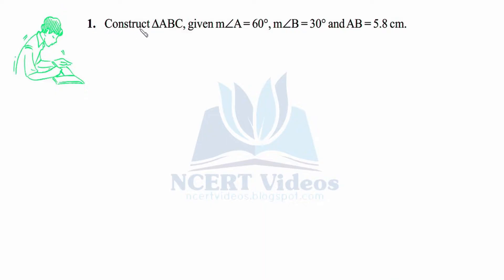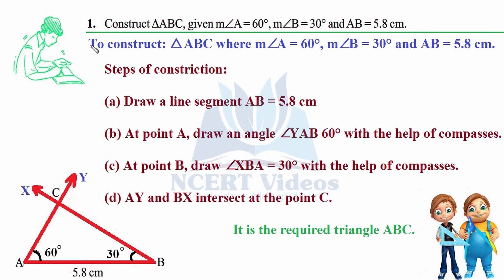Question 1: Construct triangle ABC given measure of angle A is 60 degrees, angle B is 30 degrees, and AB measures 5.8 centimeters. The aim is to construct this triangle ABC where angle A equals 60 degrees and angle B equals 30 degrees, with line segment AB measuring 5.8 centimeters.